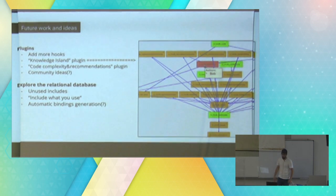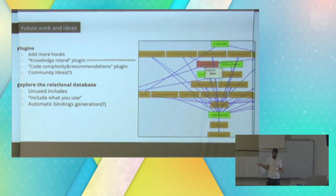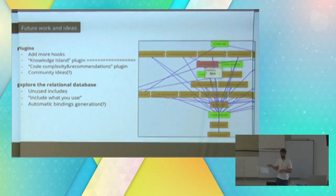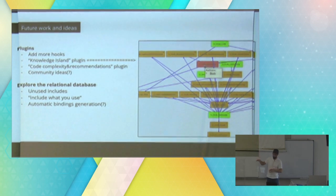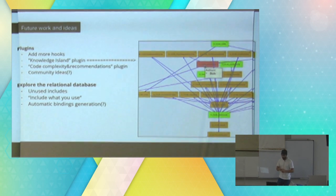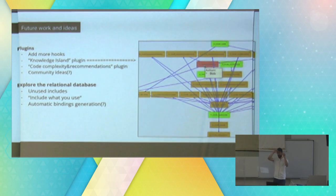The other set of ideas is regarding exploring the relational database. One thing I mentioned before is we read your code using LLVM and create a relational database representation of your code. Visualization is just one aspect — you can do many other things using the relational database. For instance, I did a bunch of examples finding unused includes. Those can be automated — I can look at the relational database and create a Python script that reads and changes the code to remove the unused includes automatically.